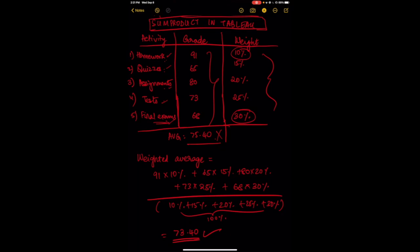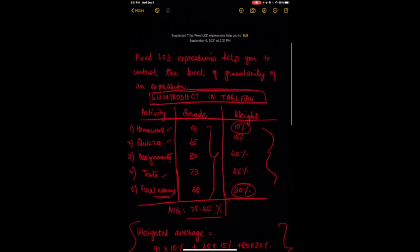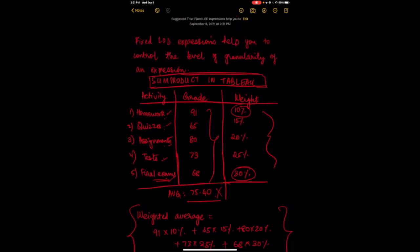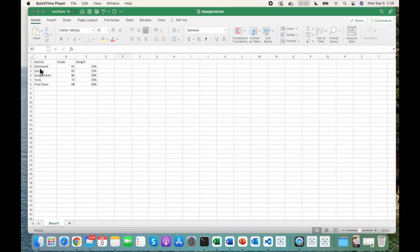Now let's see how we can implement this weighted average function in Tableau. We're going to utilize something called a Fixed Level of Detail expression. A Fixed LOD expression allows you to control the level of granularity of an expression. We have the various activities — homework, quizzes, assignments, tests, and final exam — on which a student is graded.